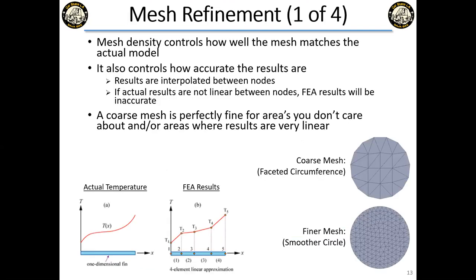Mesh density controls how well the mesh matches the actual model. Think of representing a circle with finite elements — a coarse mesh gives you a faceted polygon, while a finer mesh approaches the true circle. This directly correlates to result accuracy because the program interpolates linearly between nodes. If the real response is nonlinear between two nodes, a coarse mesh won't capture it accurately. Areas with curved or rapidly changing results need denser mesh.